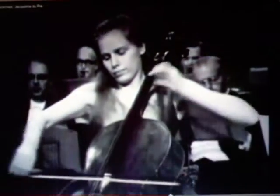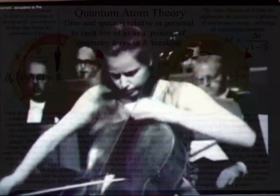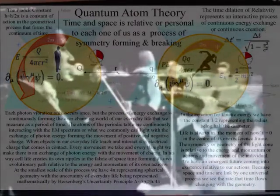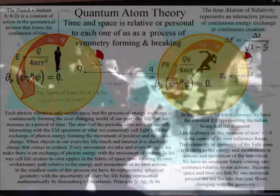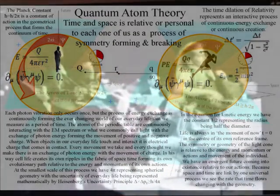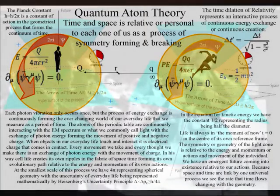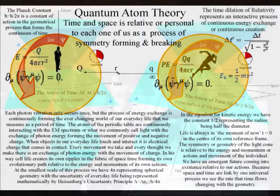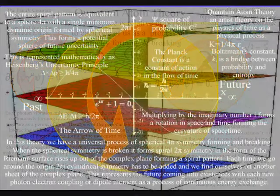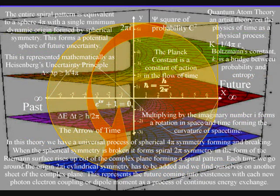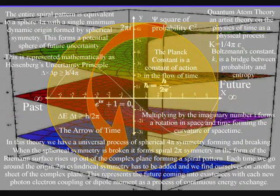This theory explains a greater reality of one creative principle behind the laws of physics, forming something like a sounding board of a musical instrument that resonates with the vibrations of one's own thoughts, efforts, and actions. Everything forms its own future space-time by slowing the rate that time flows — this is called time dilation, and is relative to our own energy and momentum. This can be seen mathematically because multiplying by the imaginary number i forms a rotation in space and time, forming the curvature of space-time.